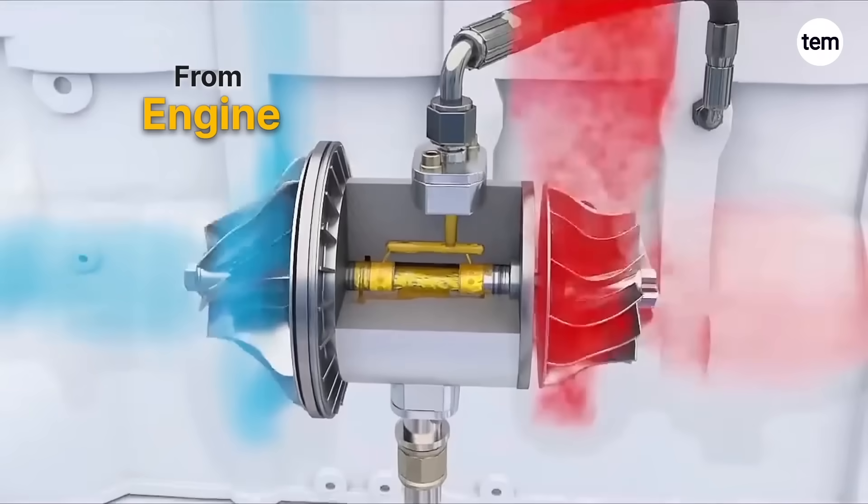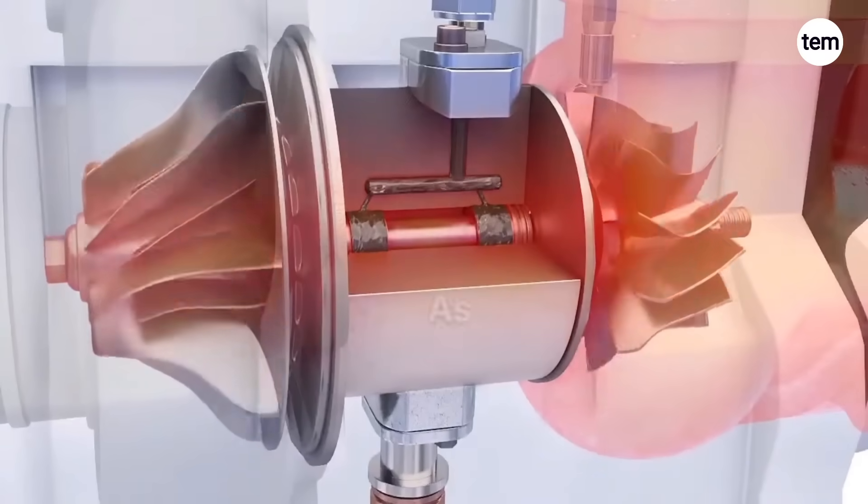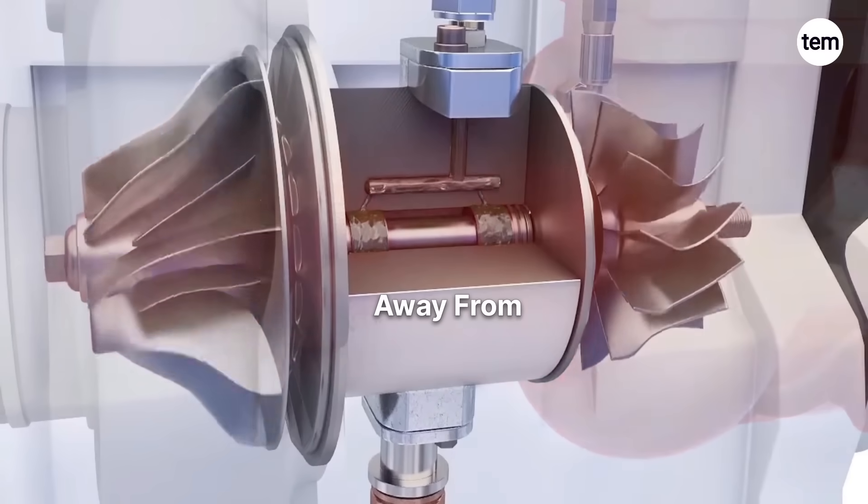An oil feed line from the engine lubricates the shaft and bearings to reduce friction during rotation. Also, oil can act as a coolant by drawing heat away from the turbocharger.